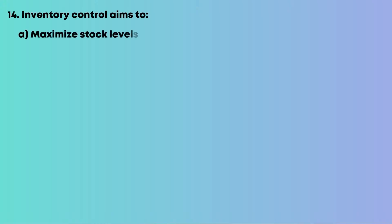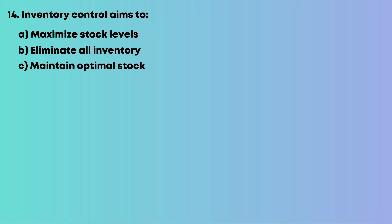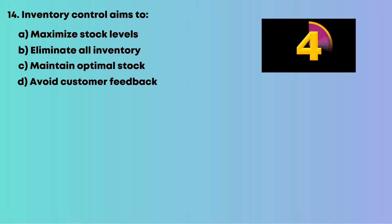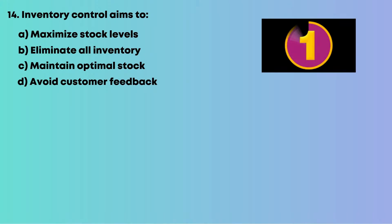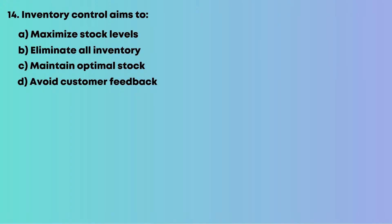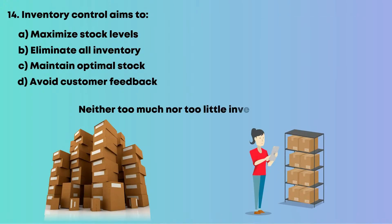Question 14: Inventory control aims to: A, maximize stock levels; B, eliminate all inventory; C, maintain optimal stock; D, avoid customer feedback. Neither too much nor too little inventory is ideal. So the answer is C, maintain optimal stock.